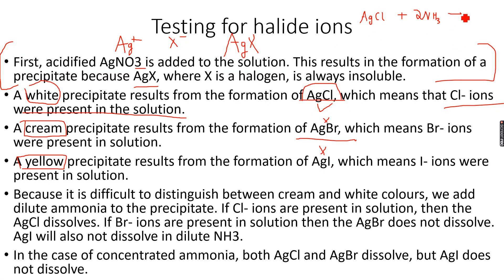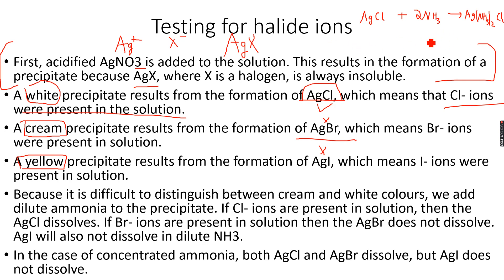2NH₃ giving us [Ag(NH₃)₂]⁺ Cl⁻. This is the reaction that is taking place — just memorize this reaction because sometimes you are asked to write it. This product is soluble whereas AgCl is insoluble.